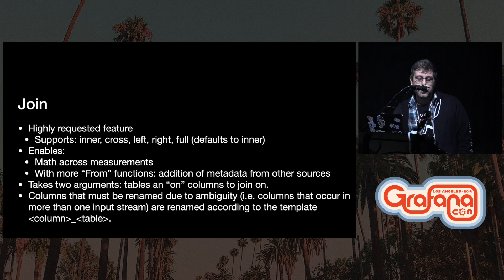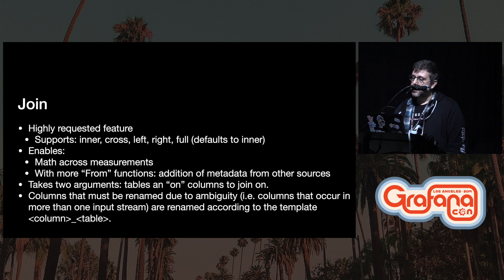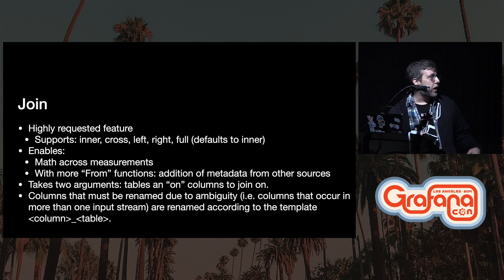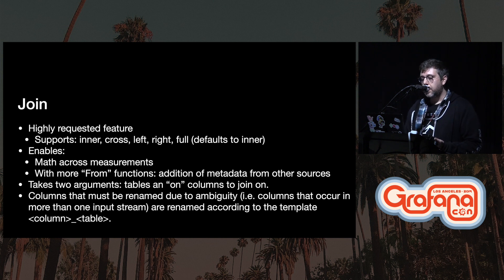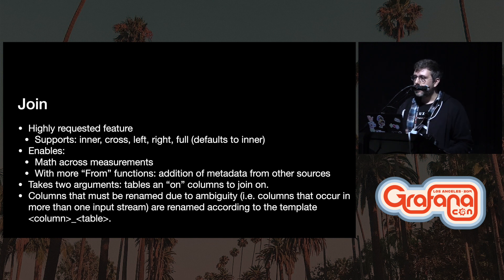The next function that's pretty valuable for time series data are joins. Joins are actually one of the most highly requested features we get in InfluxQL, so it's exciting to be able to provide that kind of functionality in Flux. Right now, joins support inner, cross, left, right, and full — it defaults to inner. But it enables a lot of functionality that people have been asking for.